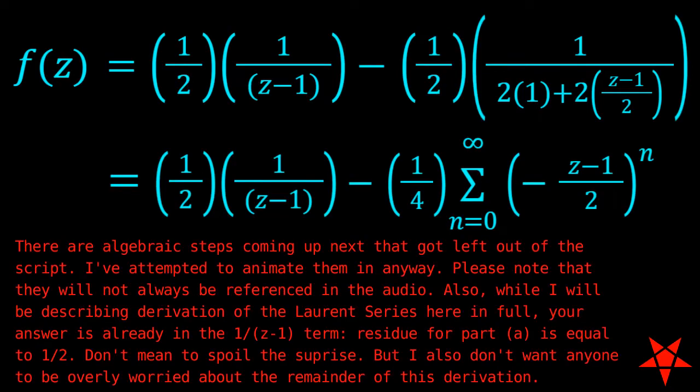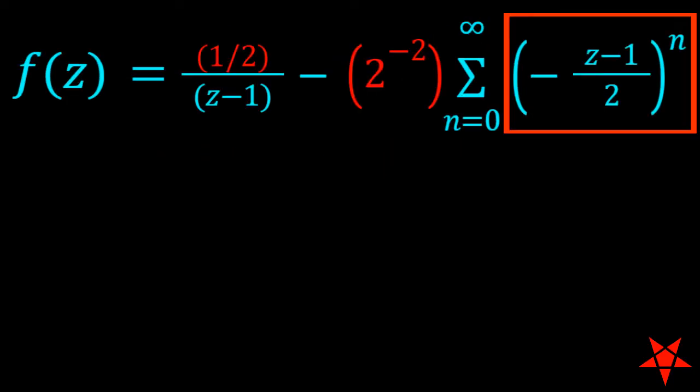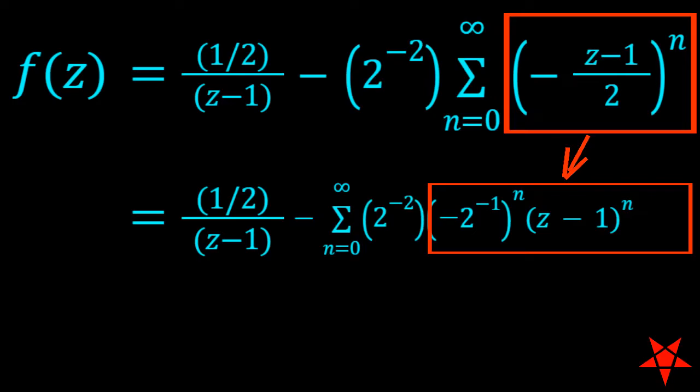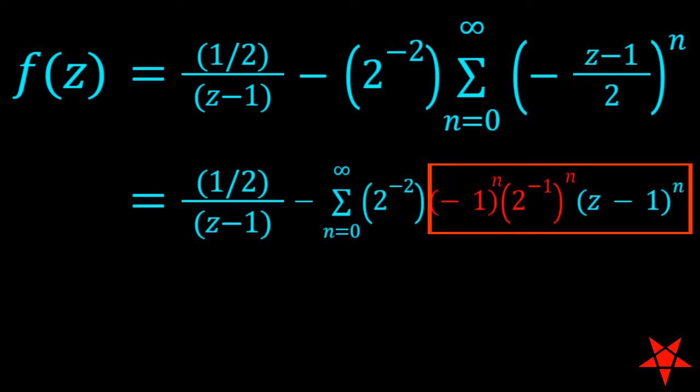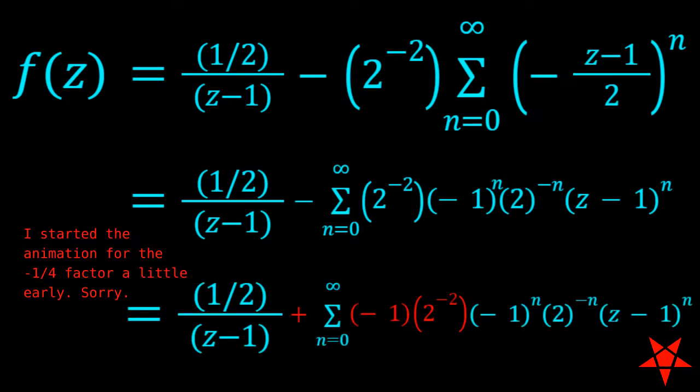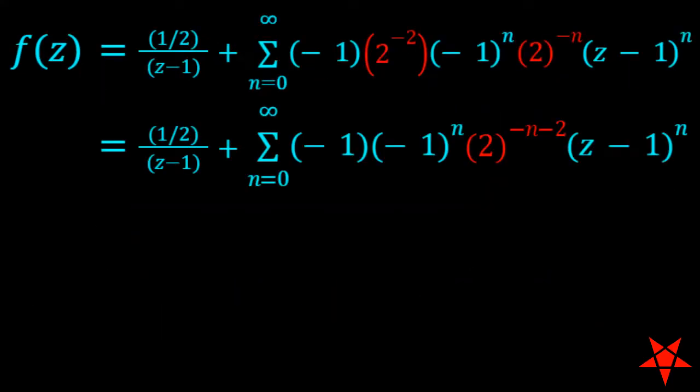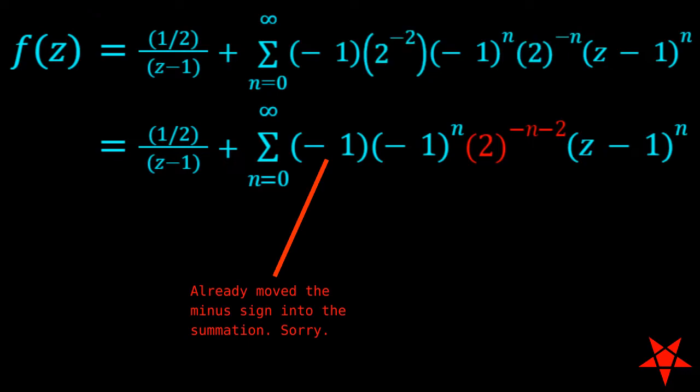I could probably stop here, but I do like to encourage good housekeeping practices when it comes to algebra. So let us incorporate that minus 1 over 4 term into the summation. Negative z minus 1 over 2 raised to the n breaks down into z minus 1 to the n and negative 2 to the negative n. At the same time, minus 1 over 4 becomes 2 to the negative 2 quantity multiplied times negative 1, and we can lump the powers of 2 together inside of the summation while the minus sign momentarily stays outside.